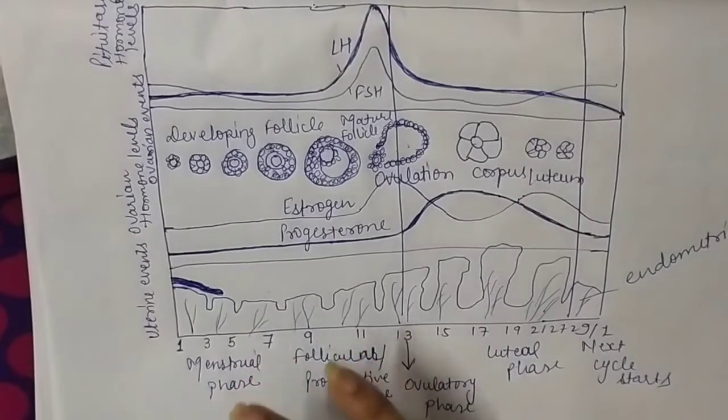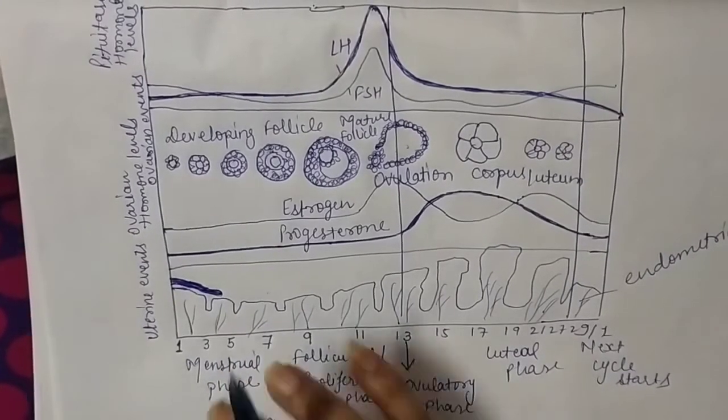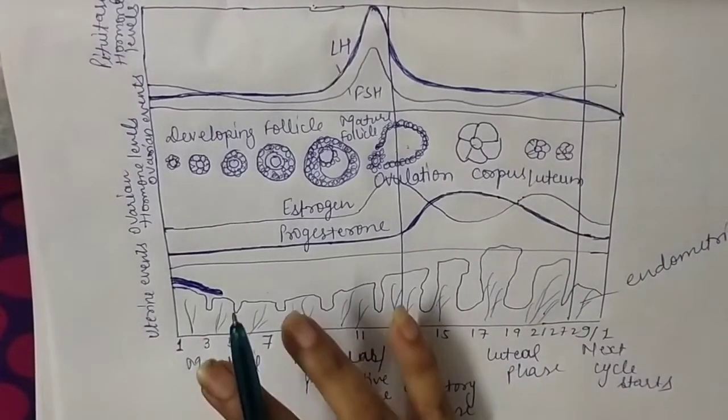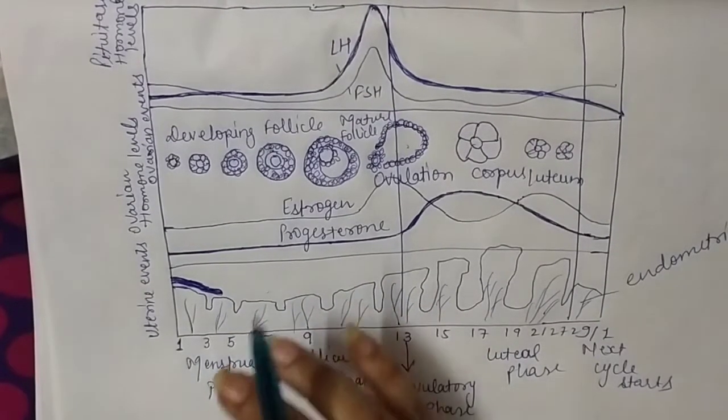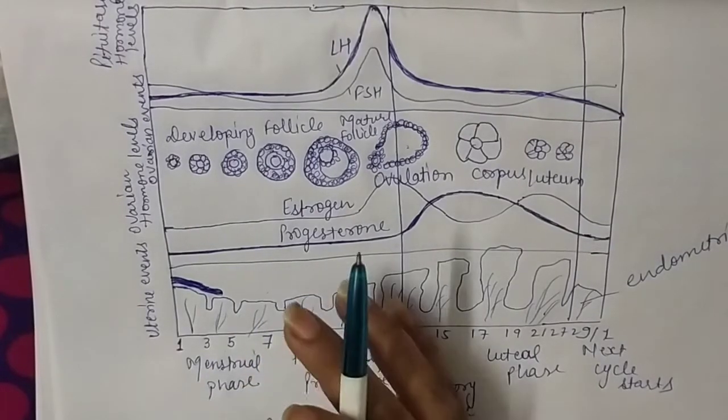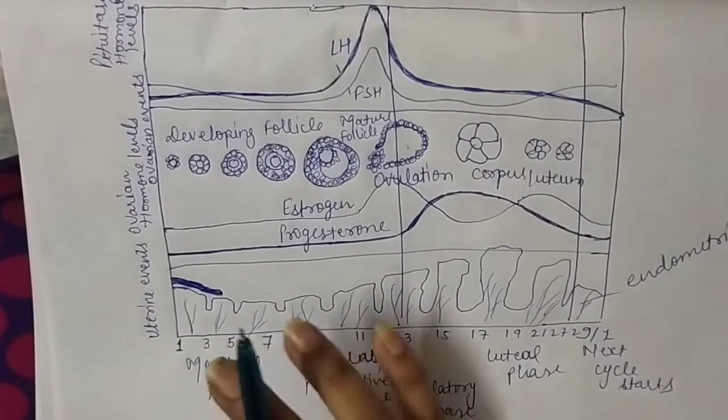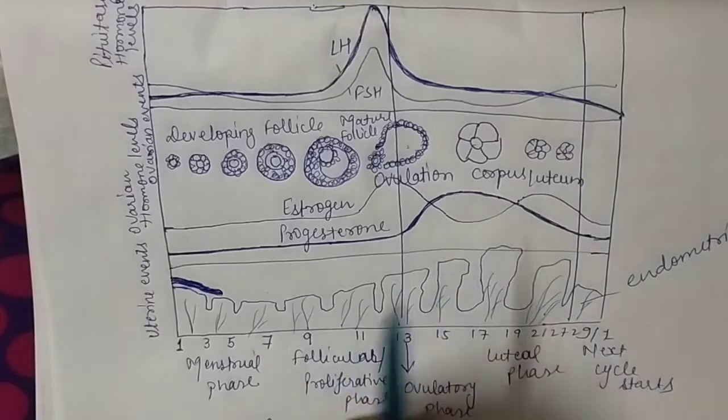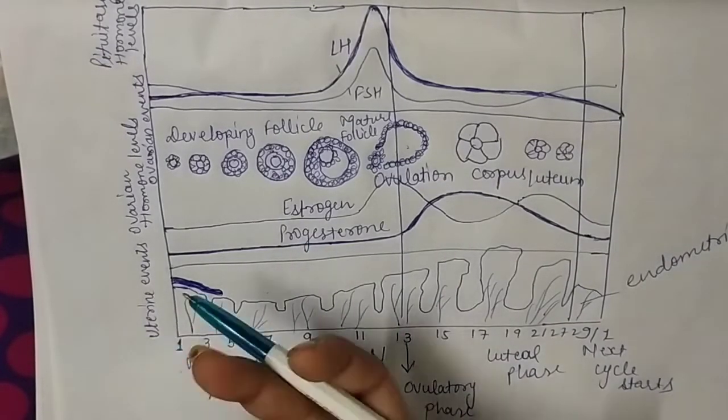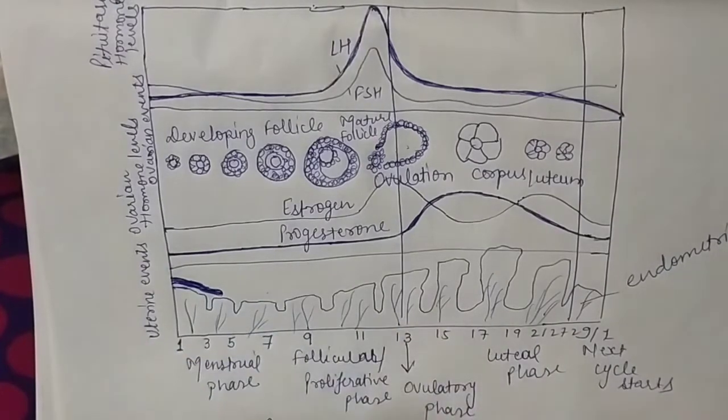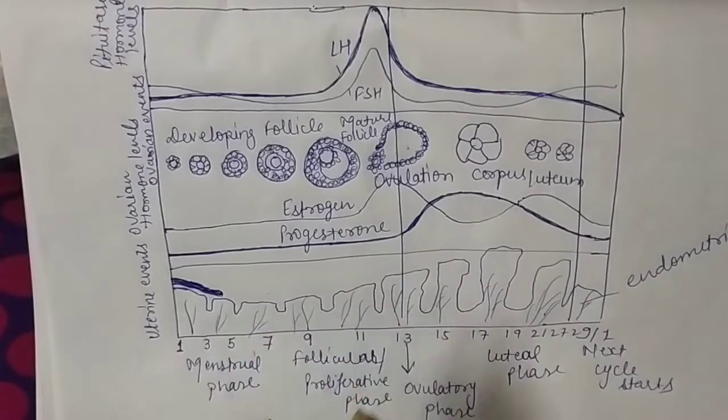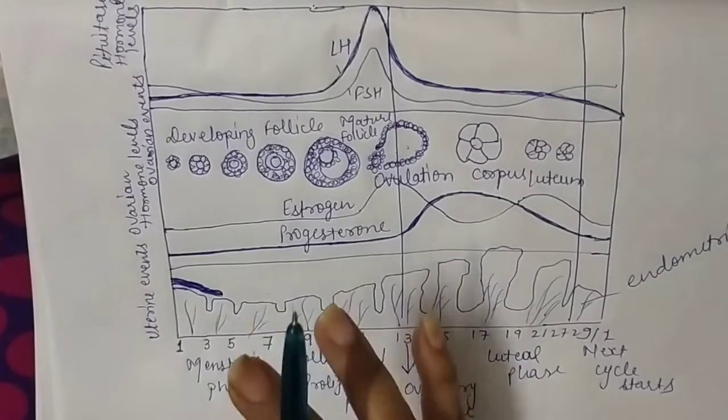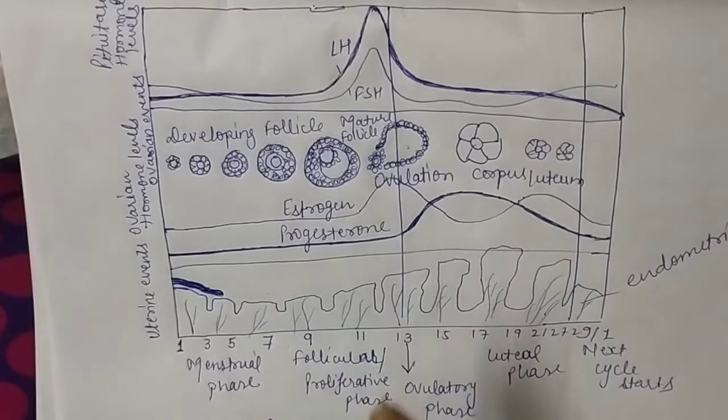If a female doesn't have her menstrual cycle, it's an indicator that the female is pregnant. Sometimes disturbances occur due to depression or hormonal imbalance, so you should consult a doctor. When a female is pregnant, for nine months while the baby develops in the uterus, the cycle remains stopped.